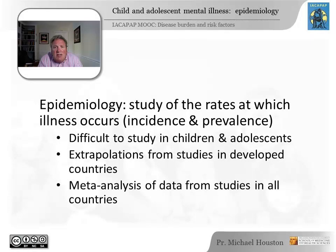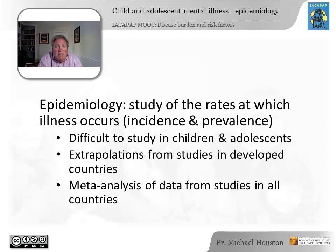Difficulty comes in actually trying to determine the incidence and prevalence in a given country or area. Studies are often quite expensive, and obtaining accurate numbers based on surveys of children and their parents are often difficult to arrange. Most well-documented studies have been done in developed countries, and while we often try to extrapolate from these studies, we're only getting a rough approximation. Another approach is to look at all the studies done and use analytic techniques to arrive at more accurate numbers, which is generally thought to give us more specific approximations. Even with these problems, these concepts can be used on smaller scales to determine how much of a problem a given illness may be causing and how effective our interventions are.